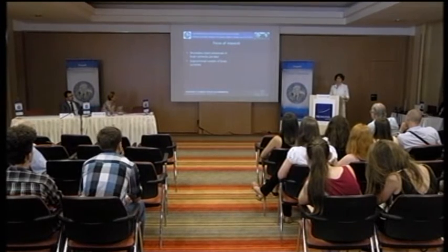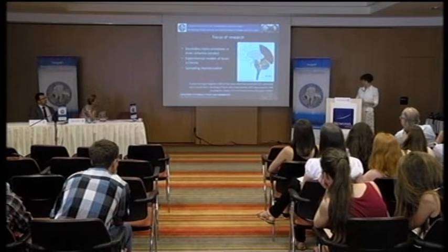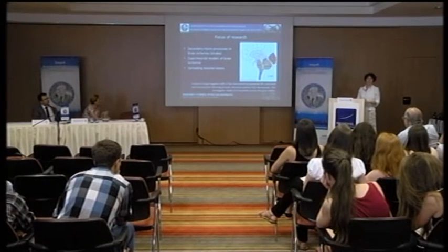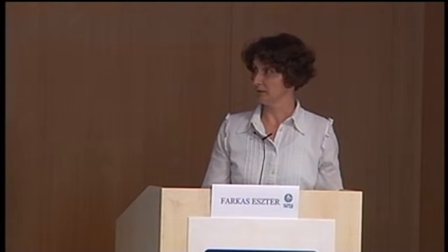We use animal models of stroke in our research. The specific secondary injury process we investigate is called spreading depolarization. It is a wave of depolarization that propagates across the cortex at a very slow rate, 2 to 6 mm per minute. This can be initiated spontaneously in the ischemic brain and it causes damage.